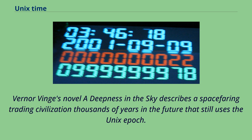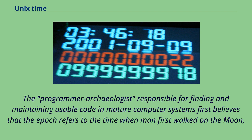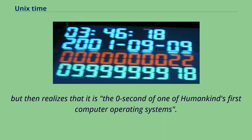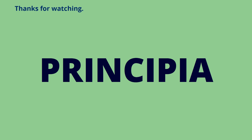Vernor Vinge's novel A Deepness in the Sky describes a spacefaring trading civilization thousands of years in the future that still uses the Unix epoch. The programmer-archaeologist responsible for finding and maintaining usable code in mature computer systems first believes that the epoch refers to the time when man first walked on the moon, but then realizes that it is the zero second of one of humankind's first computer operating systems.